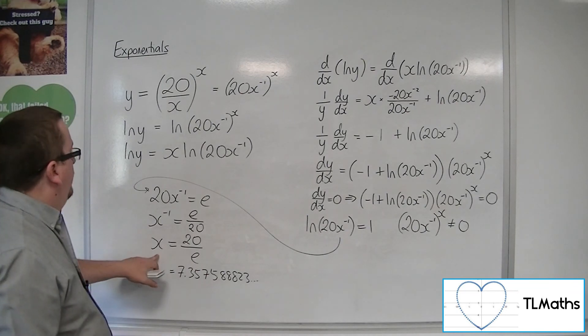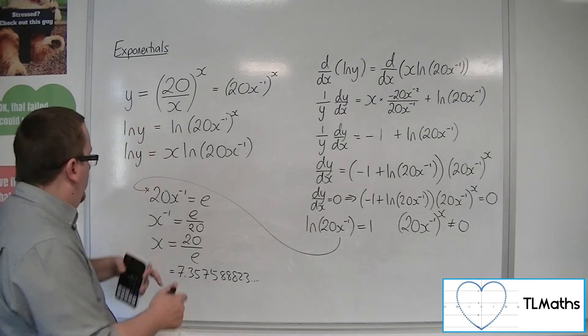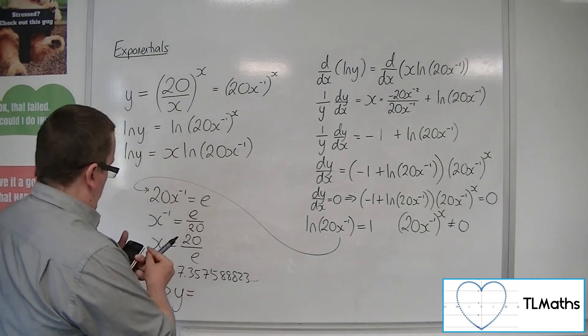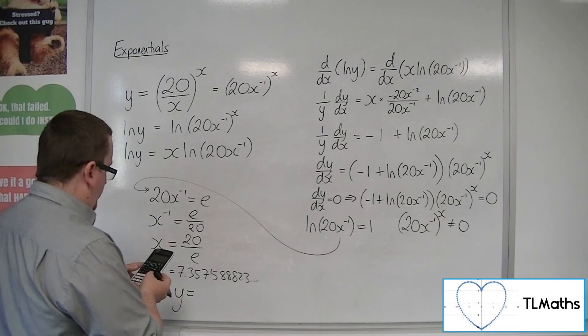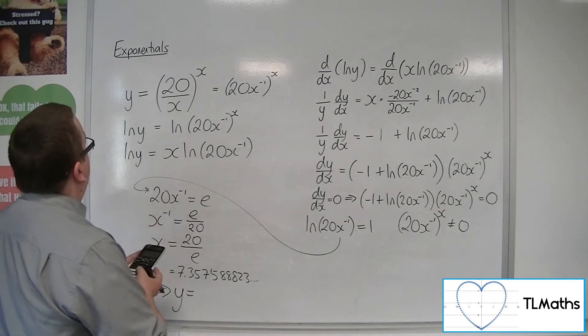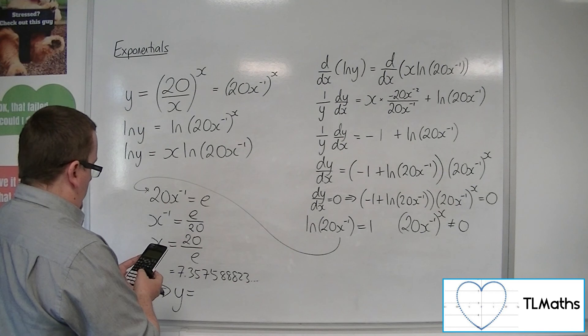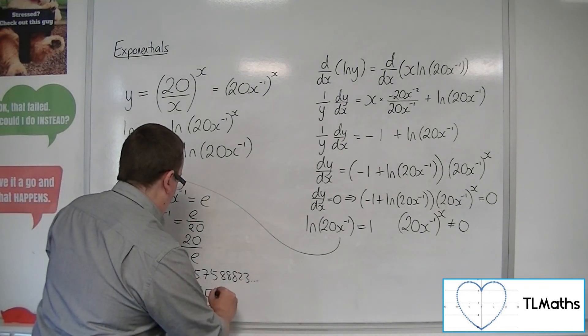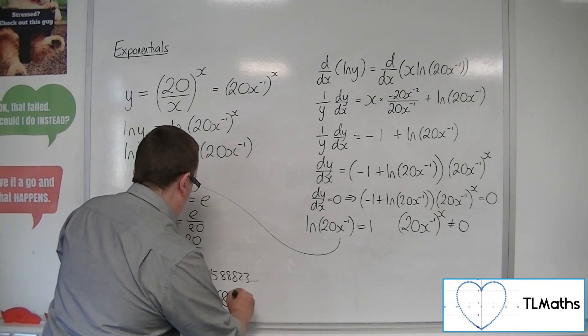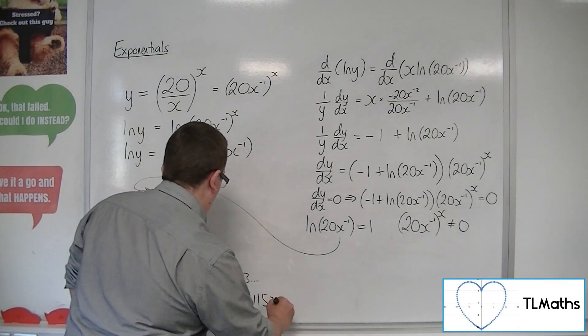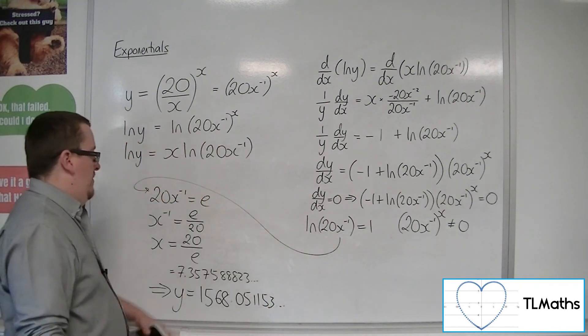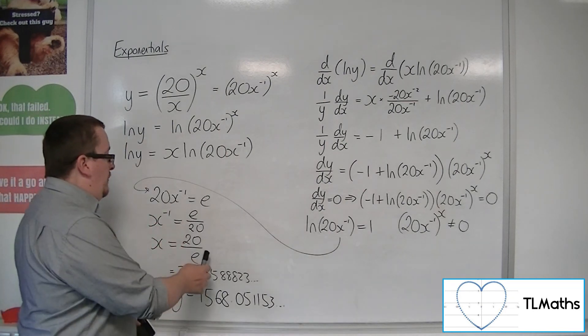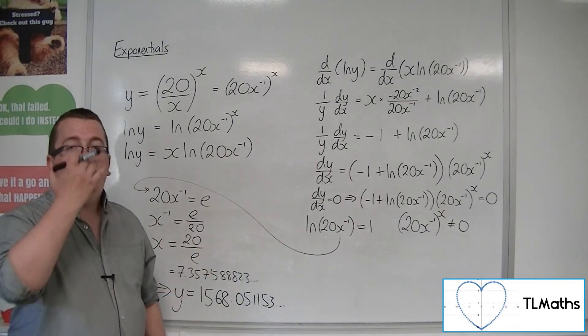So if you substitute that into this. So 20 over e, so we're going to have 20 divided by the answer. And that gives us 1568.051153. That is the maximum value of y. And the maximum value of y is given when x is equal to 20 over e.